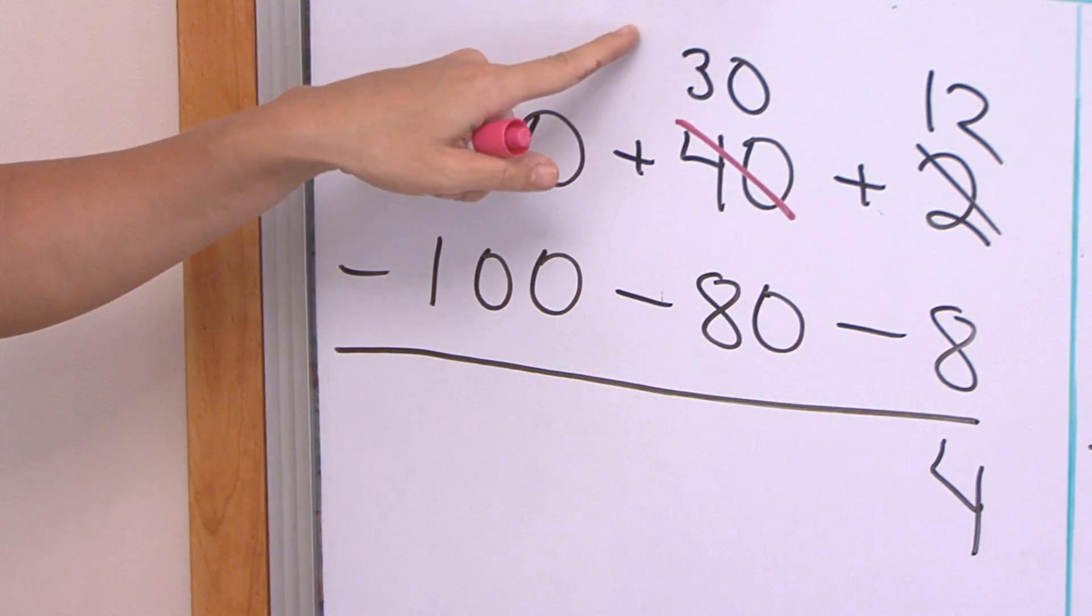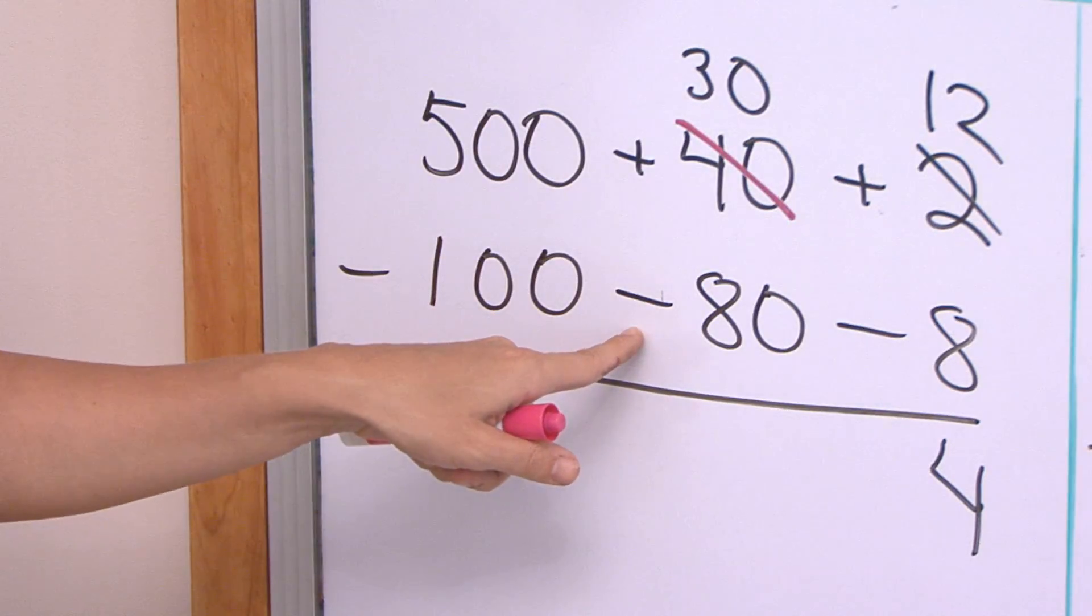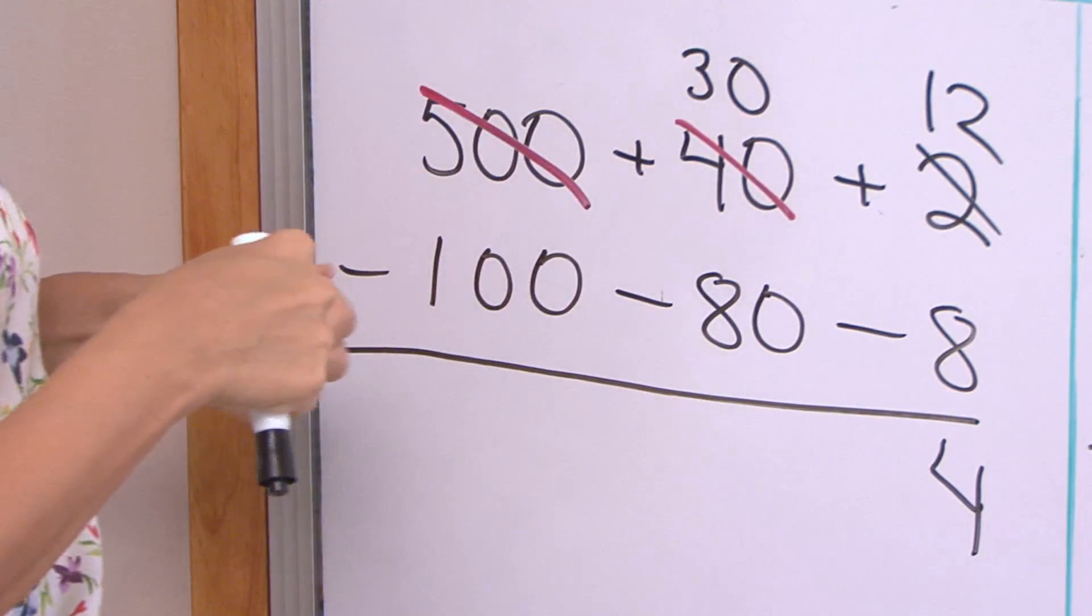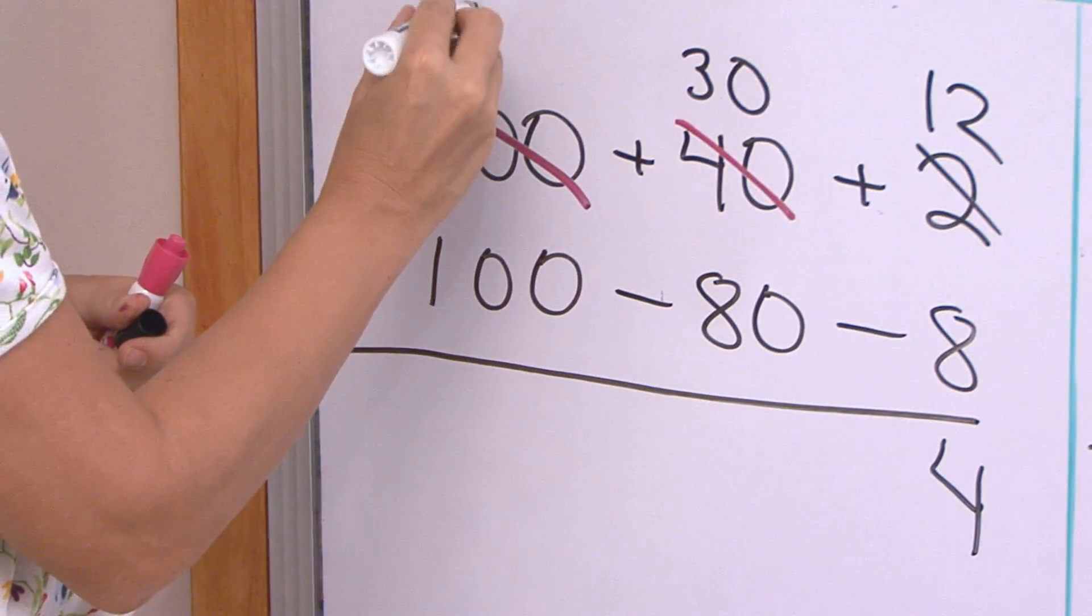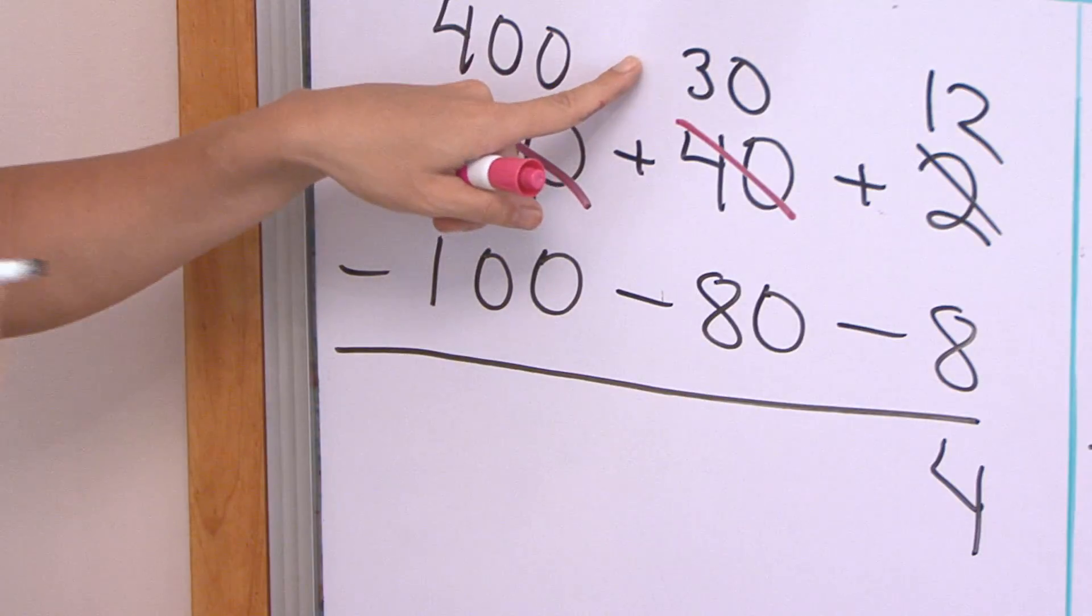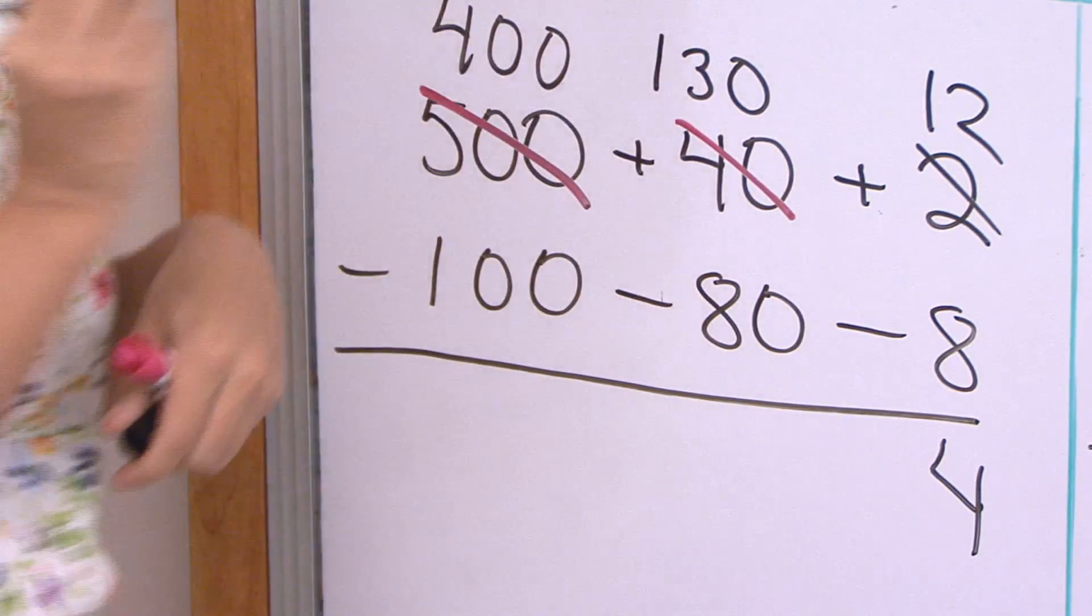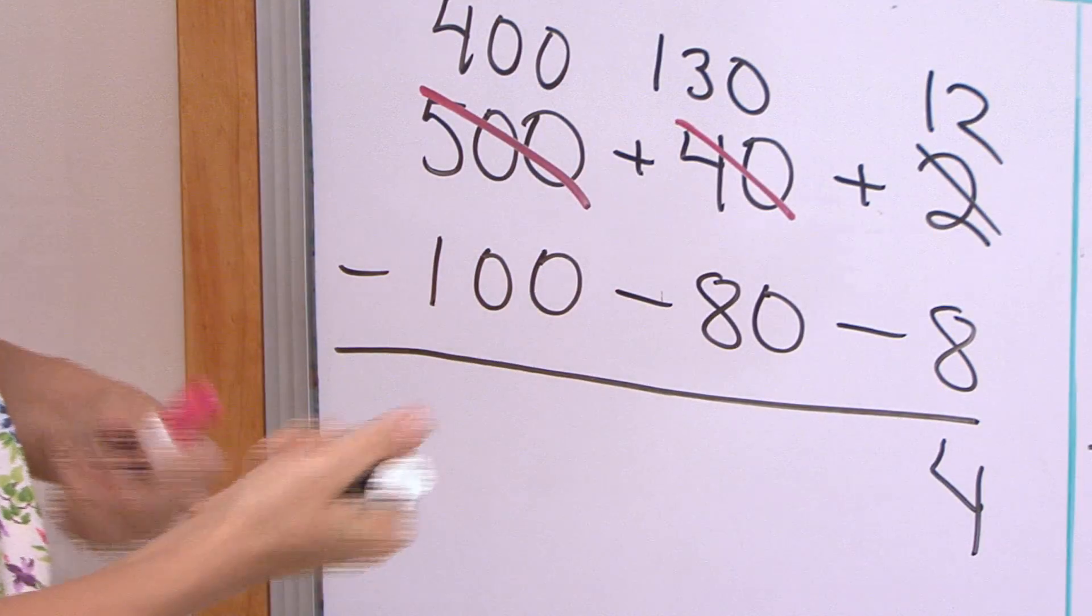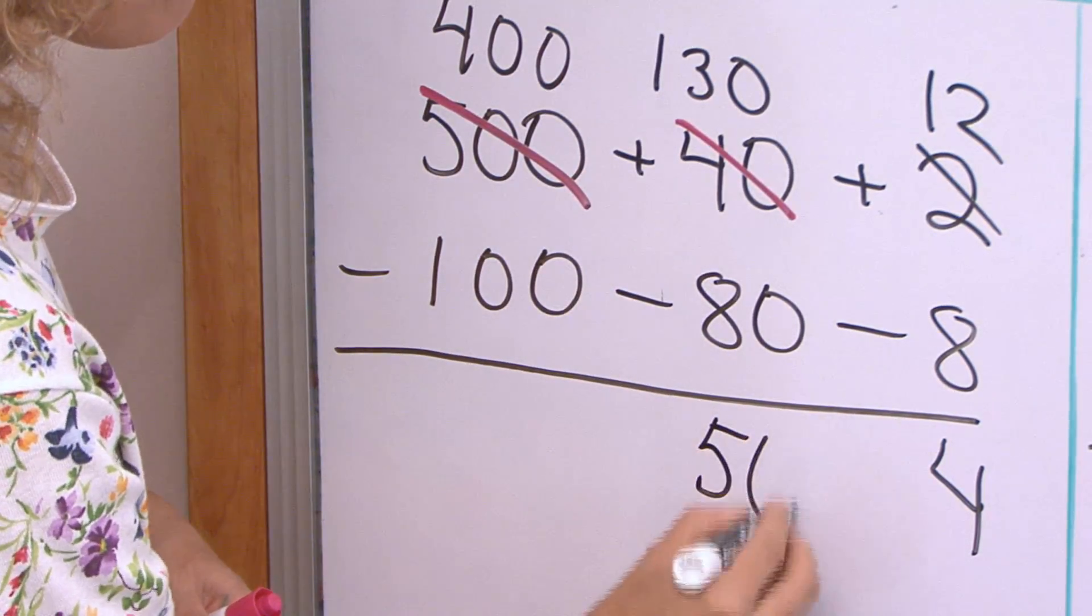But in the tens, thirty minus eighty doesn't work yet. So now I take away, I take one of the hundreds, leaving four hundred here and then that hundred moves here with the tens, so I will get one hundred and thirty. Then one hundred and thirty minus eighty, I can do that, leaves me fifty.